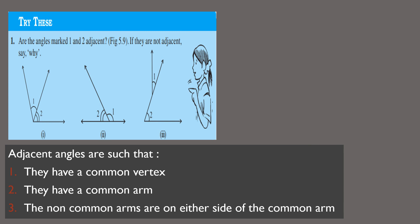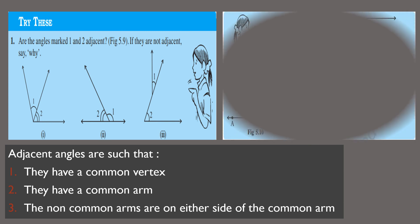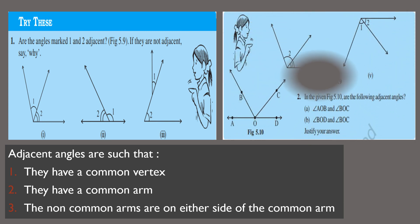In the third question, angles 1 and 2 are not adjacent, since they do not have a common vertex. Let us try the remaining questions ourselves. Thank you.